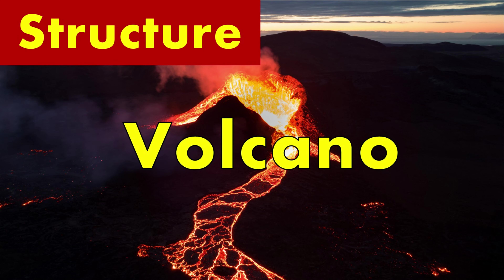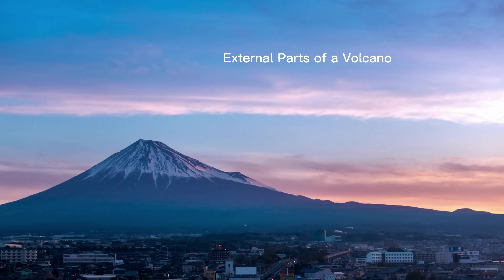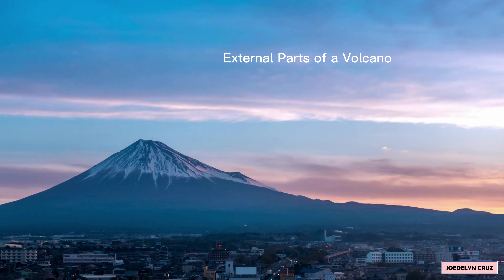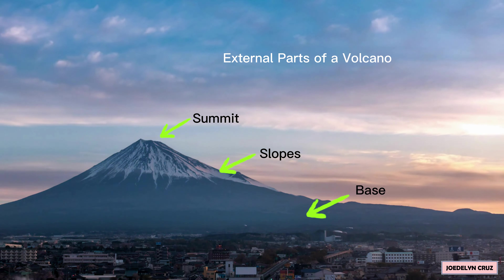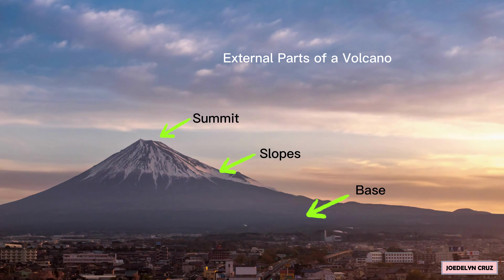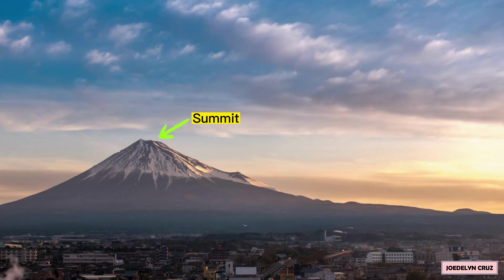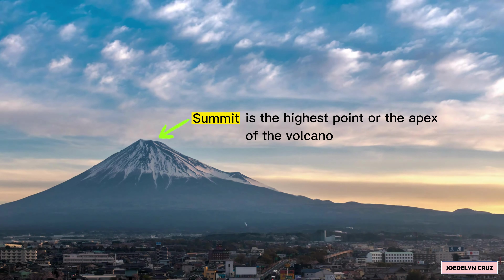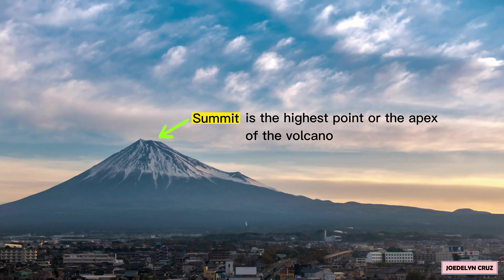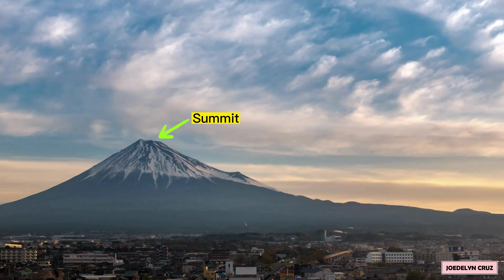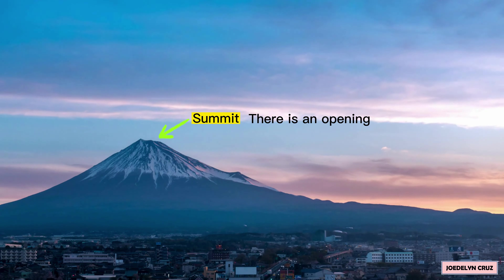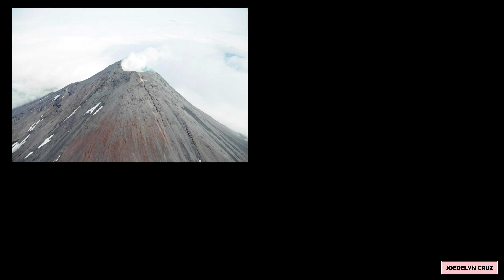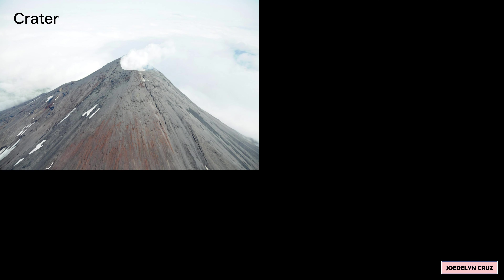The Structure of a Volcano. The external parts of a volcano are the summit, slopes, and base. The summit is the highest point or apex of the volcano. At the summit, there is an opening which may either be a crater or a caldera.